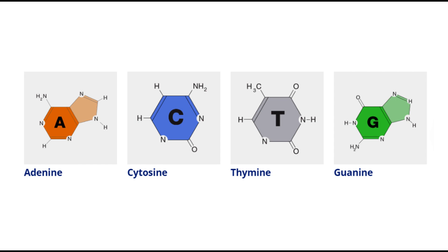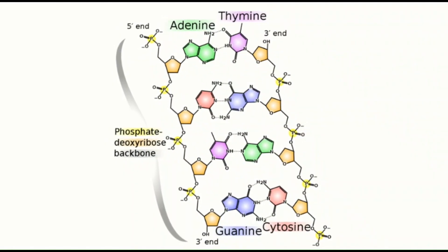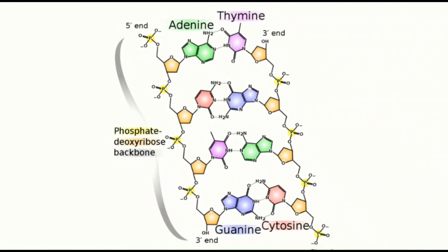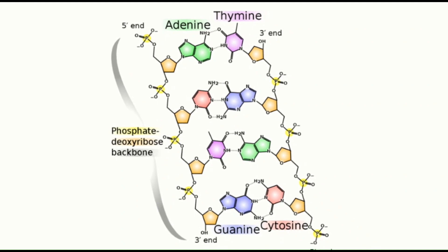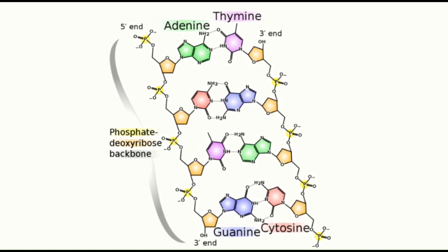The two strands are connected by chemical bonds between the bases — adenine bonds with thymine and cytosine bonds with guanine.